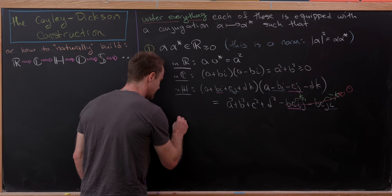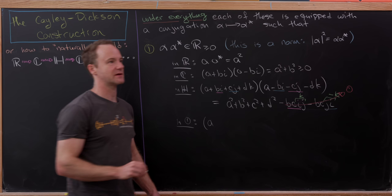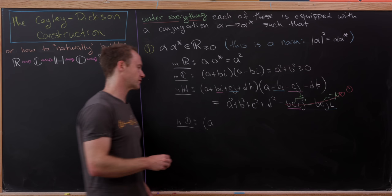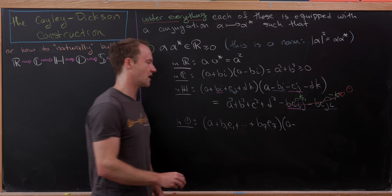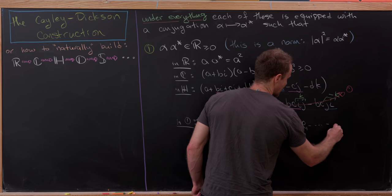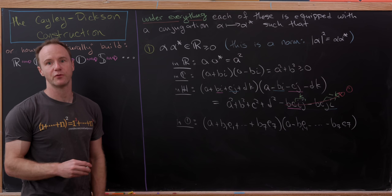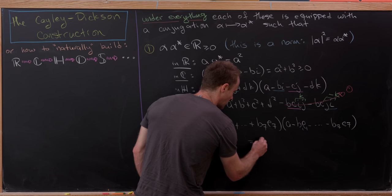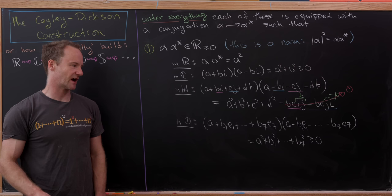Inside of the octonions, something similar happens. The octonions are an eight-dimensional vector space over the real numbers, spanned by the number one and all of the imaginary parts e1 through e7. If you write an element as a plus b1·e1 plus ... plus b7·e7 and multiply it by its conjugate — where you negate all imaginary parts — then if you know the multiplication table of the octonions, you'll see that you get a-squared plus b1-squared all the way up to b7-squared, which is clearly a non-negative real number.